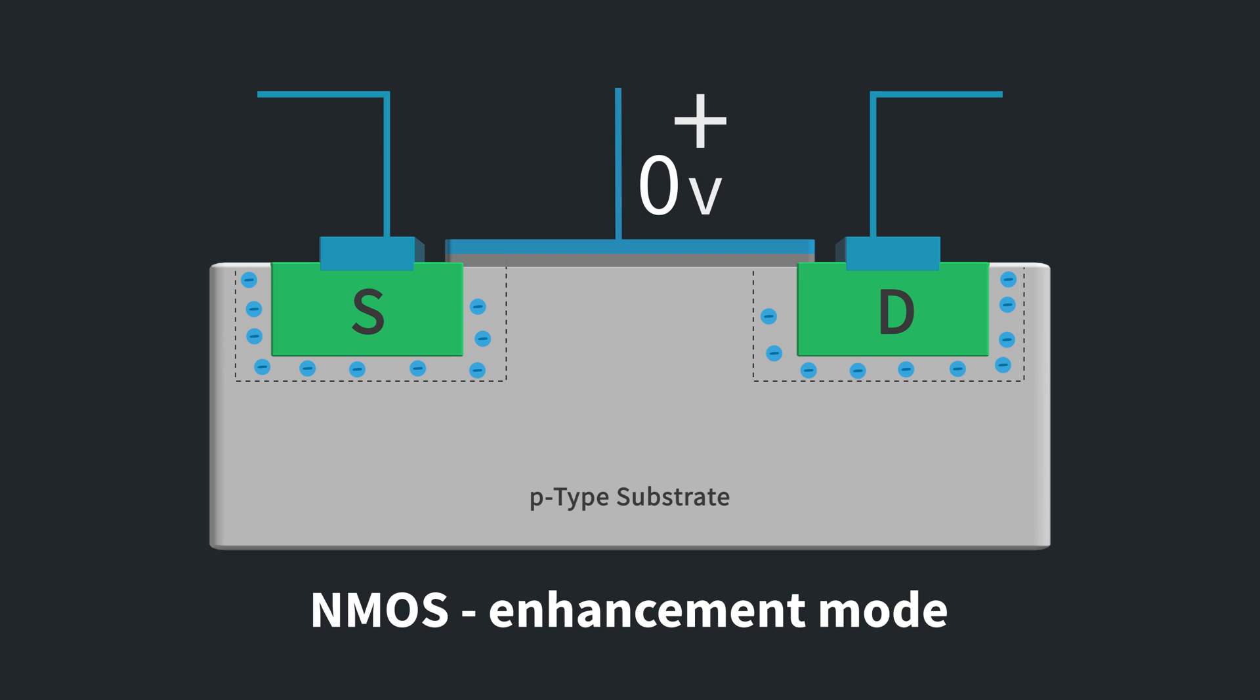As the gate voltage increases, we enter the second region of operation, the saturation region. This is where the depletion region forms beneath the gate and the depletion regions of the PN junction at the source and drain come together. You start to collect charge carriers near the drain at this point, but they don't span across the entire channel. If you put a voltage across the drain and source, you may get a current, but it won't be very large.